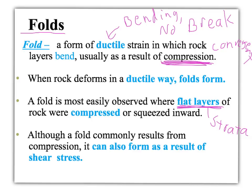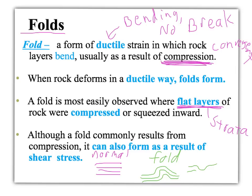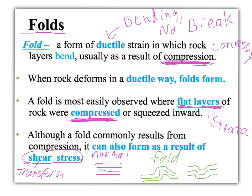Instead of seeing nice, straight, horizontal strata as we would see normally, in a fold we see where the layers look like they've been pushed or smushed together and folded up — or sometimes a rock can fold down. The big thing is we see these layers of rock get compressed and squeezed. While we normally find folds from compression, we can also see folds from shear stress, which comes from transform boundaries where the plates are sliding past each other.